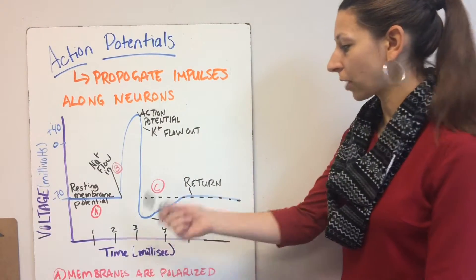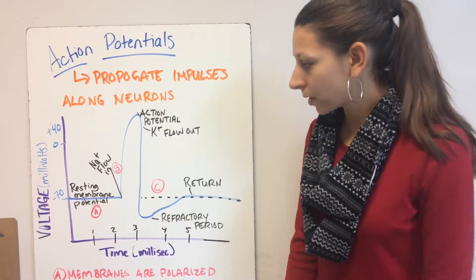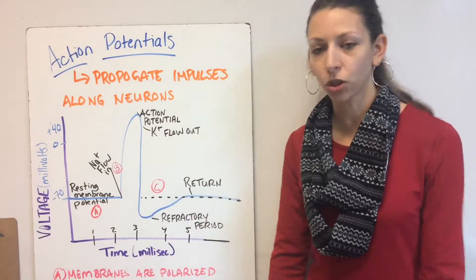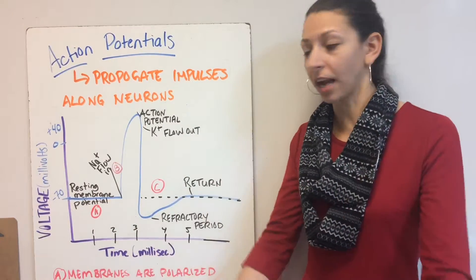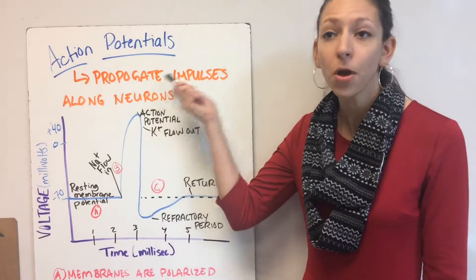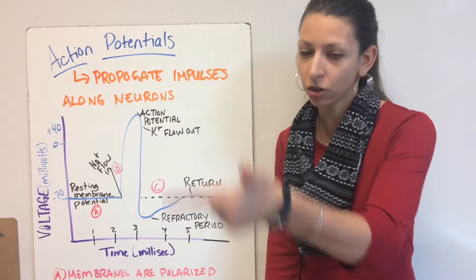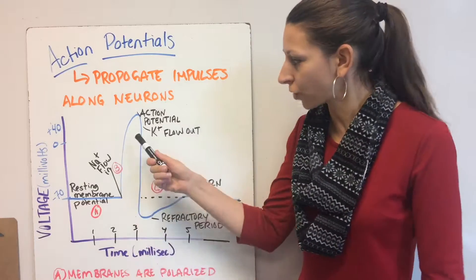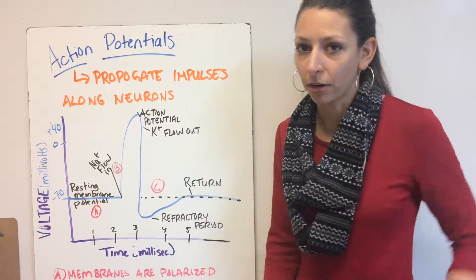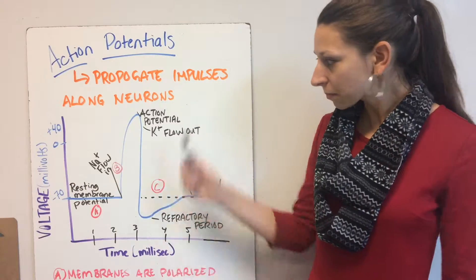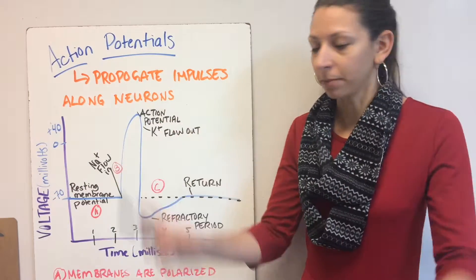In an action potential, the membranes will be polarized. We start at resting membrane potential. An action potential is an all-or-nothing thing. We're either going to have the entire jump or nothing at all. Think about it like a gun firing. We're not going to have a trickle of sodium ions flowing in. It will be all the sodium ions at once and all the potassium ions going out.